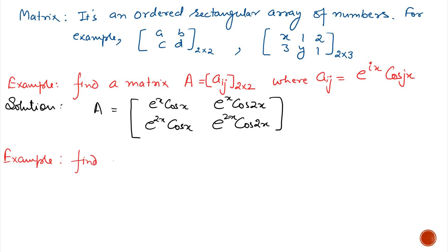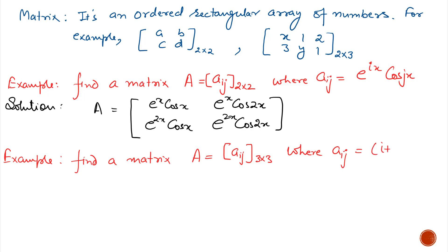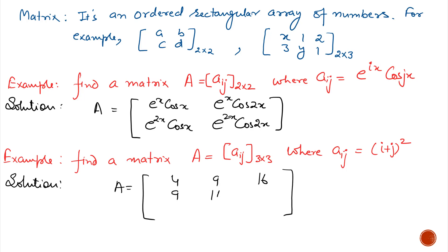Next example: find a matrix A of order 3×3, where aij = (i + j)². The order is 3×3, so the number of elements is 9. First element a11: (1+1)² = 4. Next element a12: (1+2)² = 9. Next element a13: (1+3)² = 16, and so on. And this is the required matrix.